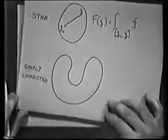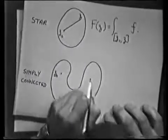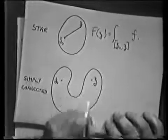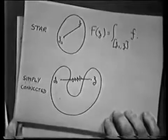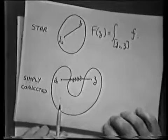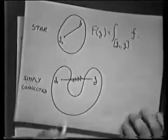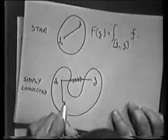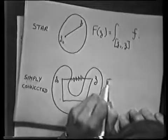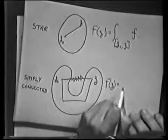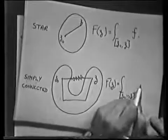For a simply connected region, if we have some point here, Z₀, then we can't reach every other point. For instance, we can't reach this point Z by means of a straight line segment, because part of the straight line doesn't lie in the region. So in order to get an antiderivative theorem for a simply connected region, we have to make some sort of adjustment. We can't use a straight line, so what we do is use the next best thing: a polygonal line. And we define our antiderivative F of Z to be the integral along this polygonal line of our function F.